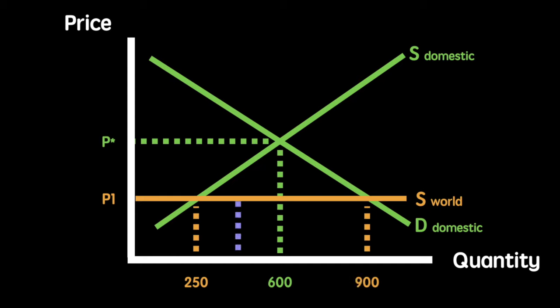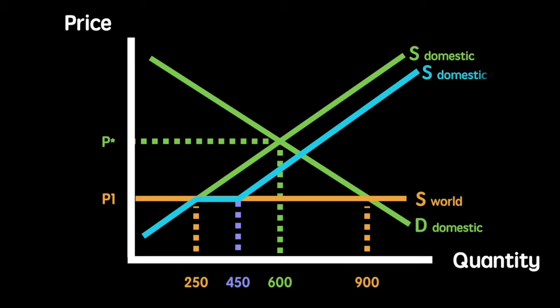Suppose the government introduces a quota of 200 units. This now means that domestic suppliers will supply 450 units and world producers will supply 200 units. You'll see how the domestic supply extends, as there is excess demand at this point.